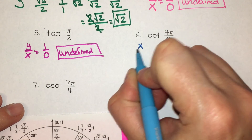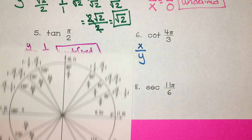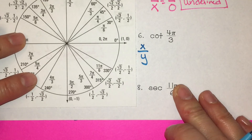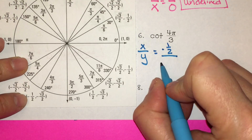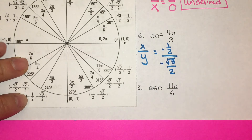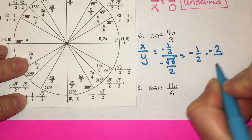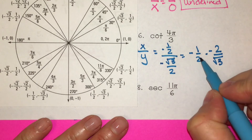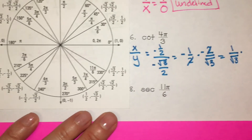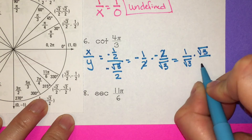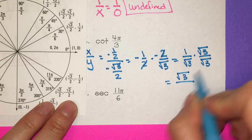Cotangent is x over y. At 4π over 3, the x coordinate is negative 1 half over the y coordinate negative square root of 3 over 2. Keep it, change it, flip it. The 2's cancel, and a negative times a negative is a positive, giving 1 over square root of 3. Multiply by square root of 3 over square root of 3, leaving square root of 3 over 3.